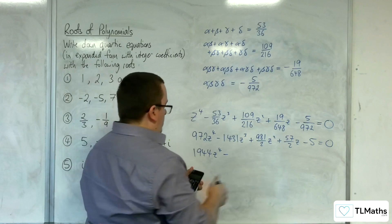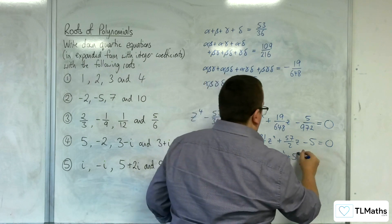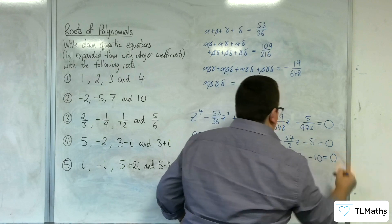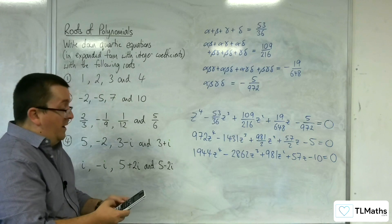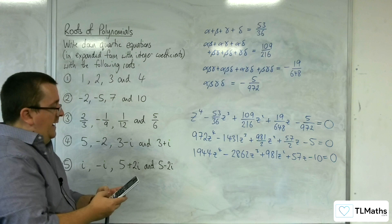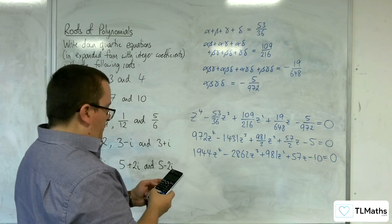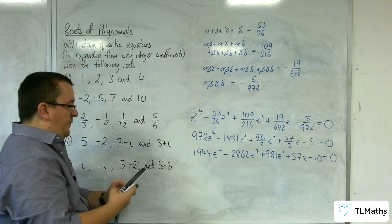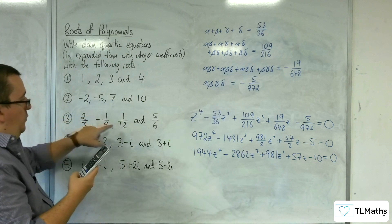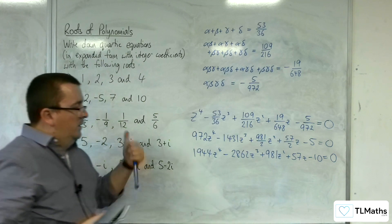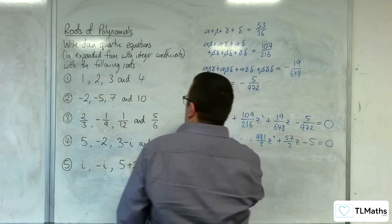So 1944 z to the 4, minus 2862 z cubed, plus 981 z squared, plus 57z, take away 10, equals 0. Fingers crossed that this has worked out. So I'm going to go to my quartic solver and plug this in: 1944, minus 2862, 981, 57, minus 10. We've got 5 sixths, 2 thirds, 1 twelfth, and minus 1 ninth. Hooray! So that's number 3 — that's what happens when you make up some numbers.